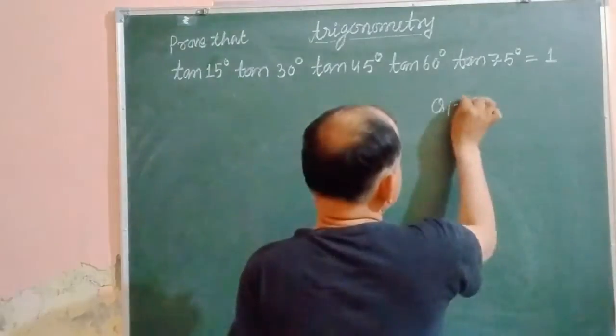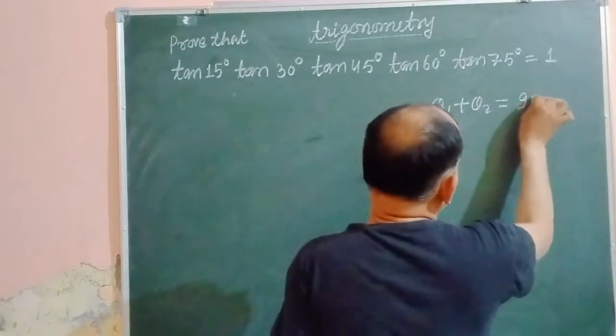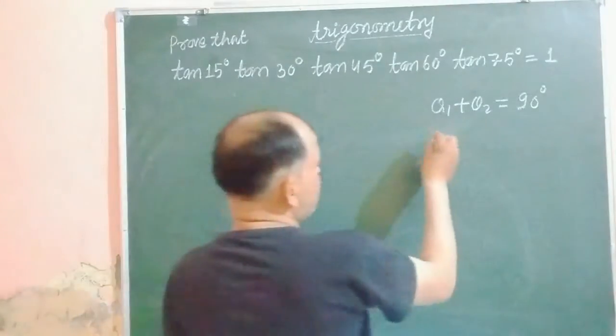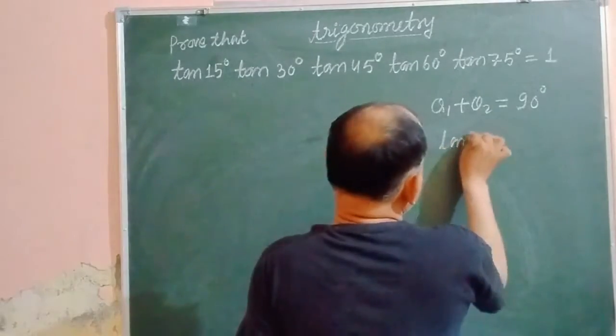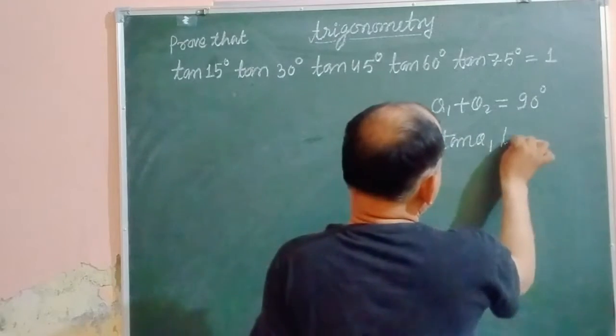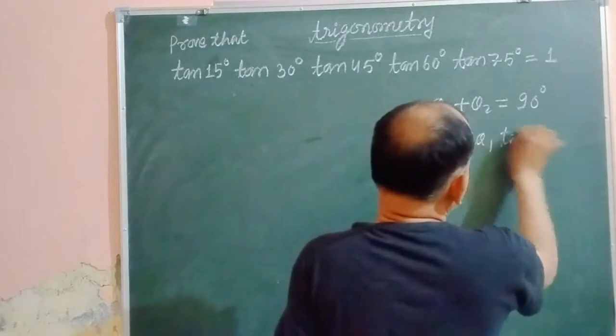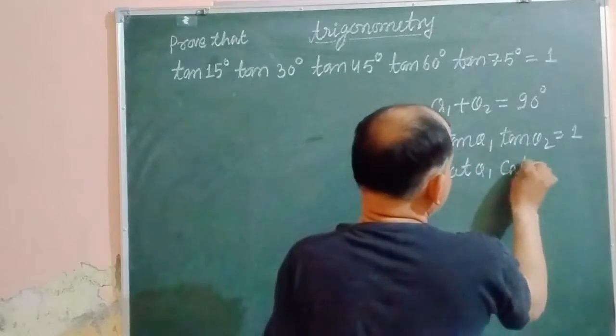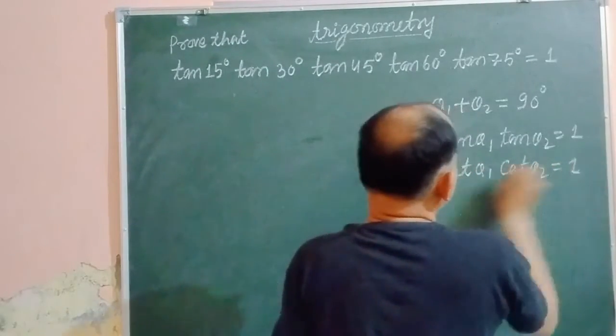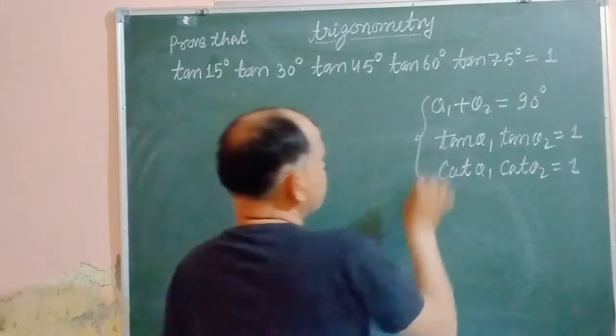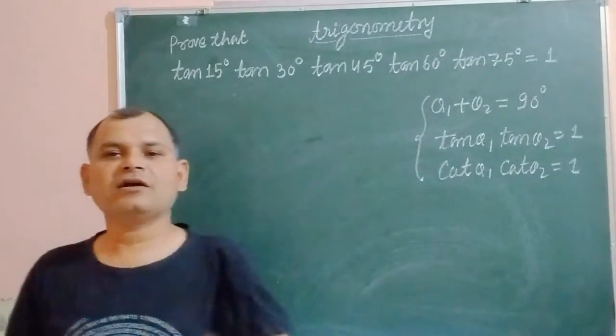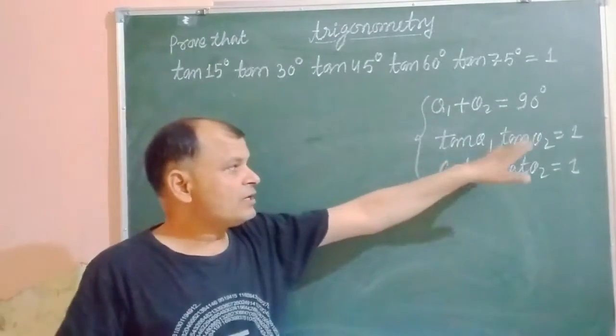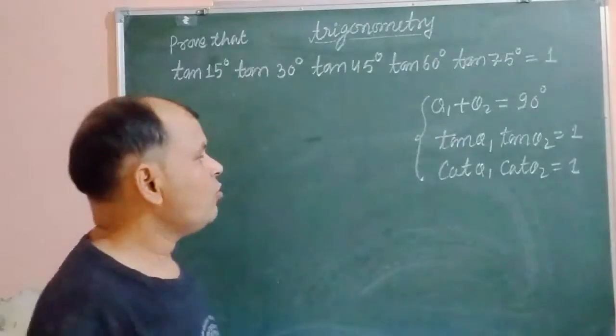theta1 plus theta2 are complementing to each other, or theta1 plus theta2 equal to 90°, then always learn that tan theta1 times tan theta2 equal to 1. So if you know that if two angles are complementary or making a pair of complementary, then tan theta1 times tan theta2 equal to 1.